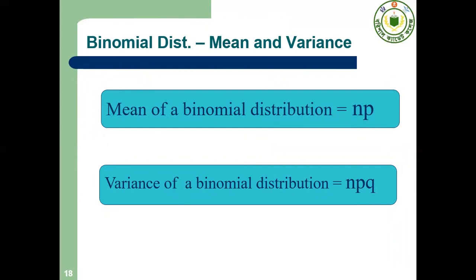Now the mean and variance of binomial distribution: the mean of a binomial distribution equals np, and the variance equals npq, where n equals the number of trials, p equals the probability of success, and q equals the probability of failure.